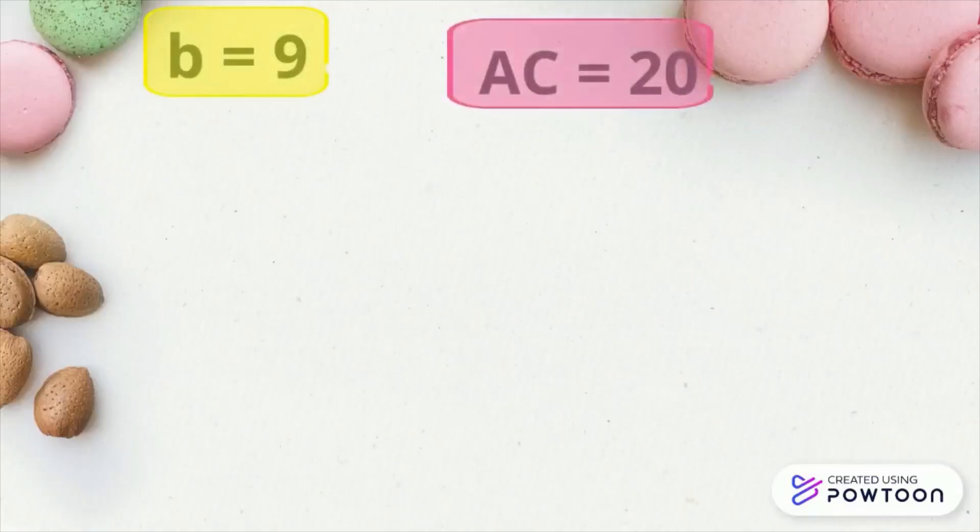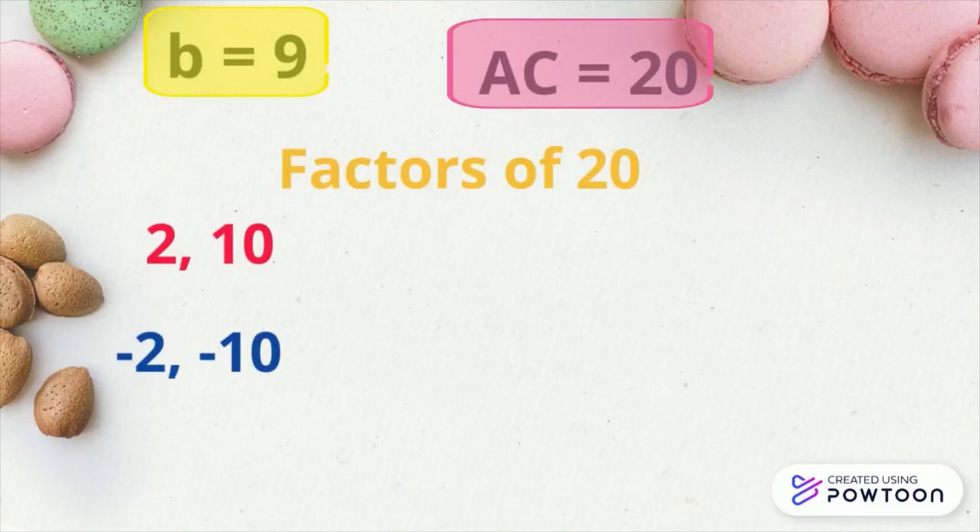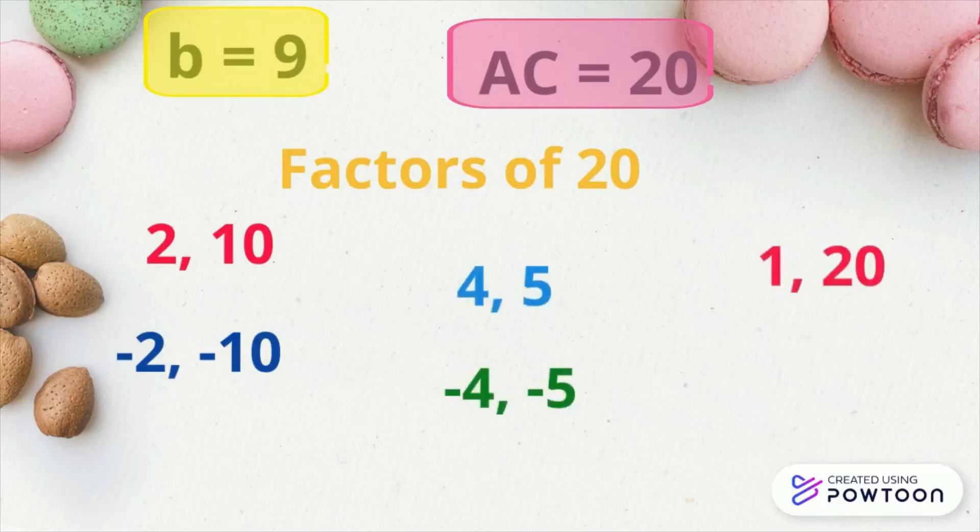We are to list down the factors of 20. Positive 2 and positive 10. Negative 2 and negative 10 is positive 20. 4 and 5, negative 4 and negative 5. 1 and 20, negative 1 and negative 20.